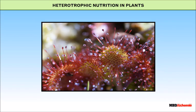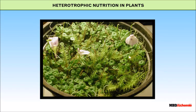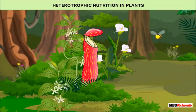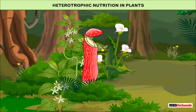Some plants eat insects; they are called insectivorous plants. Examples include the pitcher plant, sundew, and utricularia. The leaves of the pitcher plant are modified into a pitcher and lid. When an insect comes in contact with it, the lid gets closed and the insect gets digested inside the pitcher.